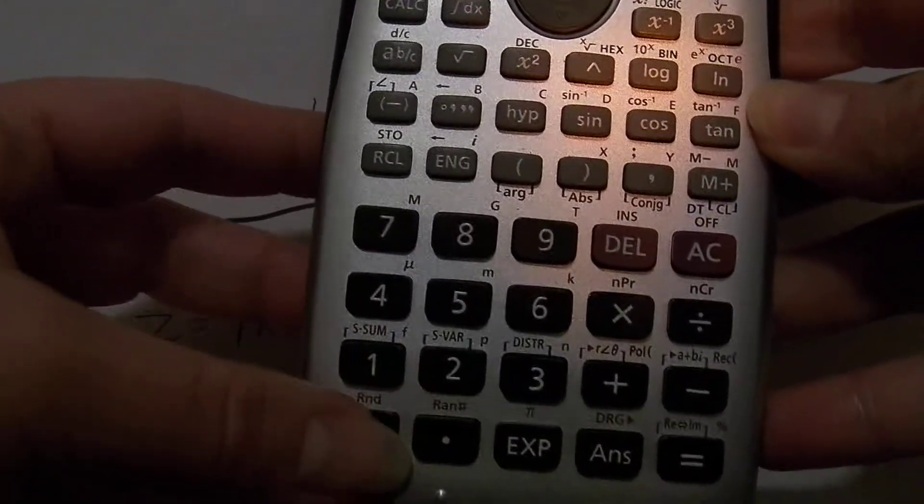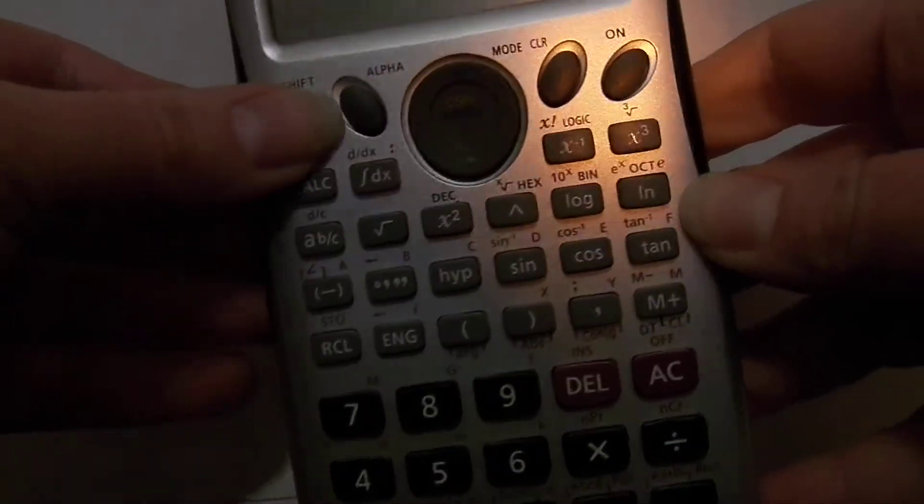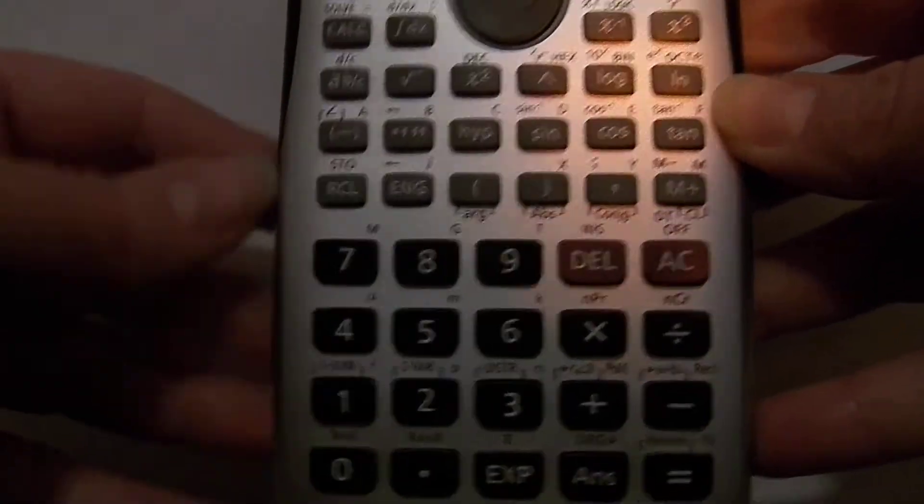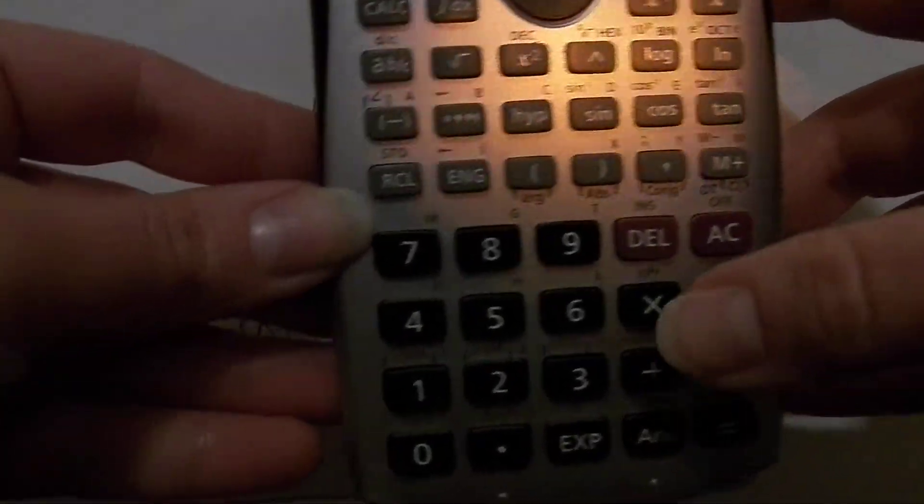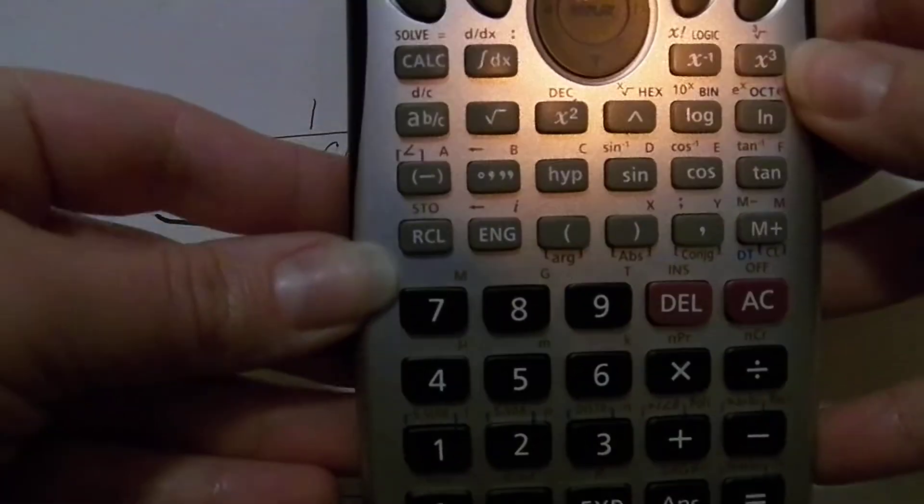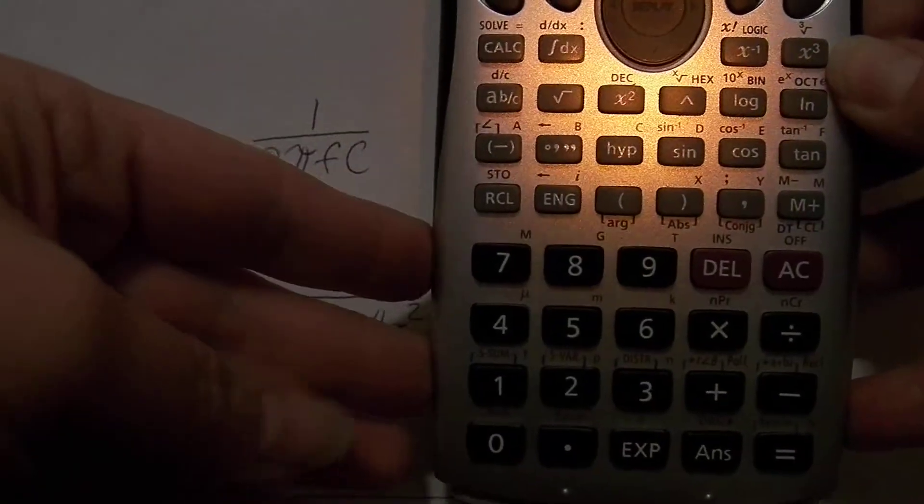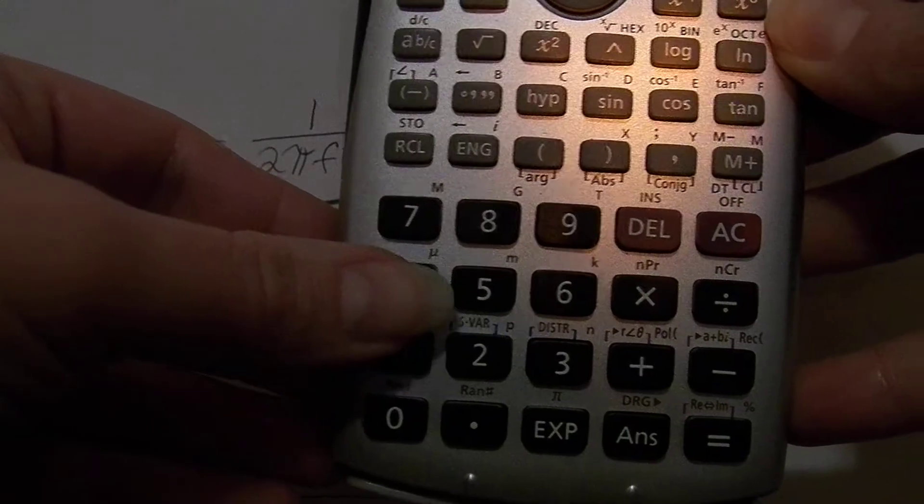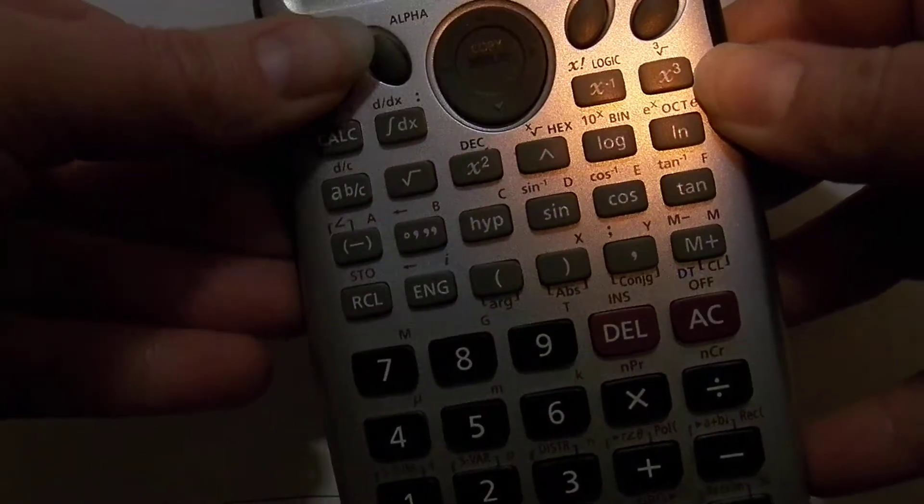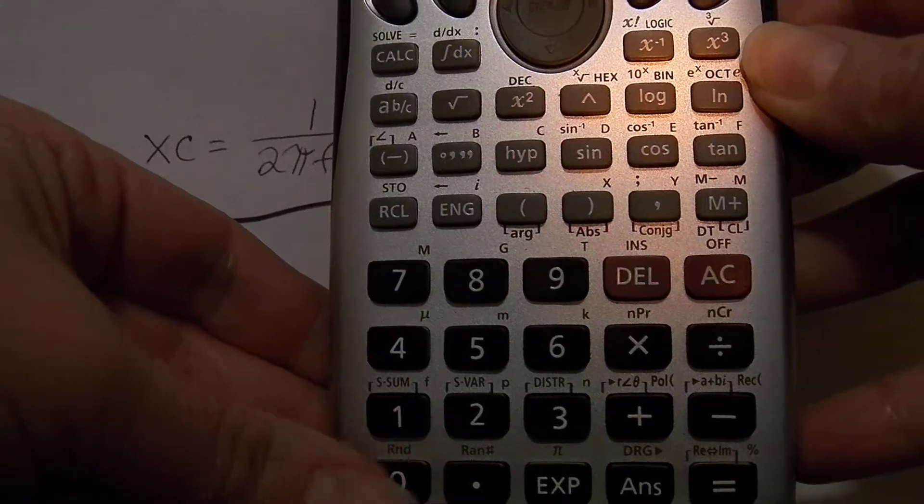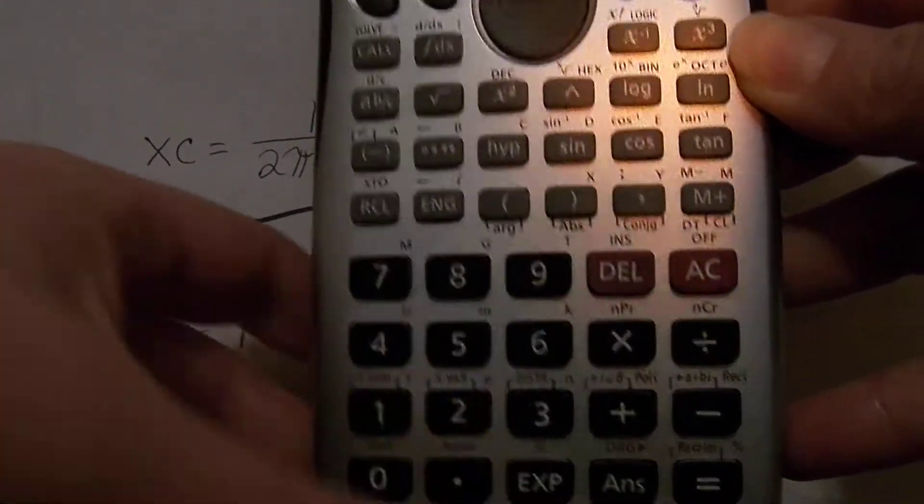We'll say in this case it is 10k, so you would put 10. Use your shift button to get your kilo, which is right over your 6 in kind of a beige color. And then you would multiply that by the capacitive value, which in this case let's say is 4 micro. So we're going to use our shift again so we can indicate our micro, which is right over the 4.